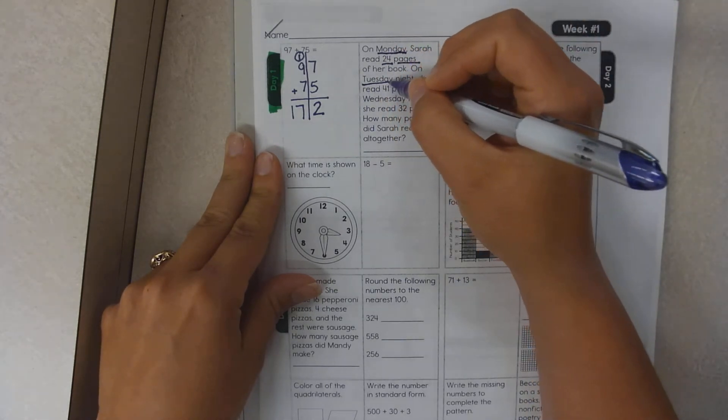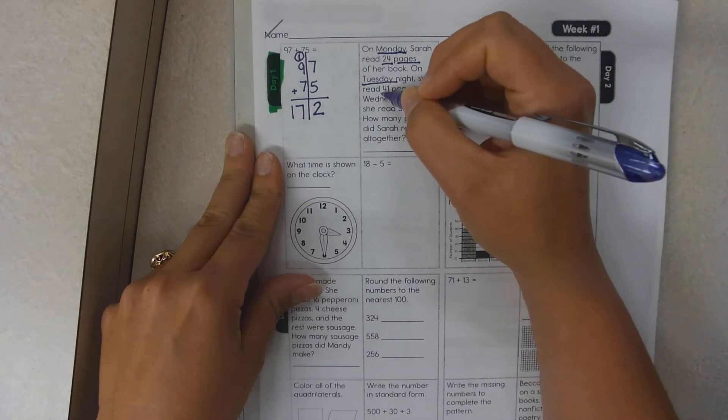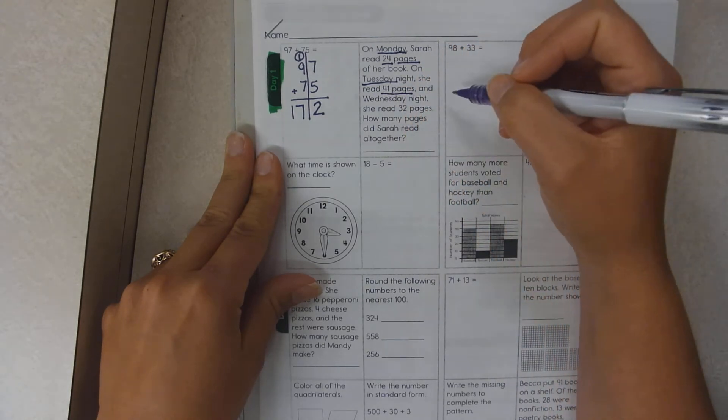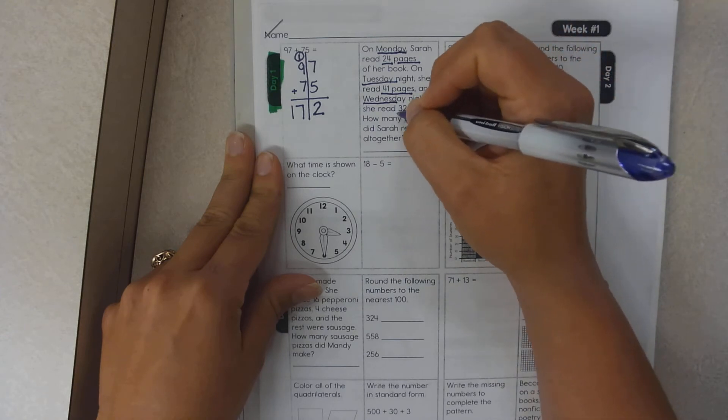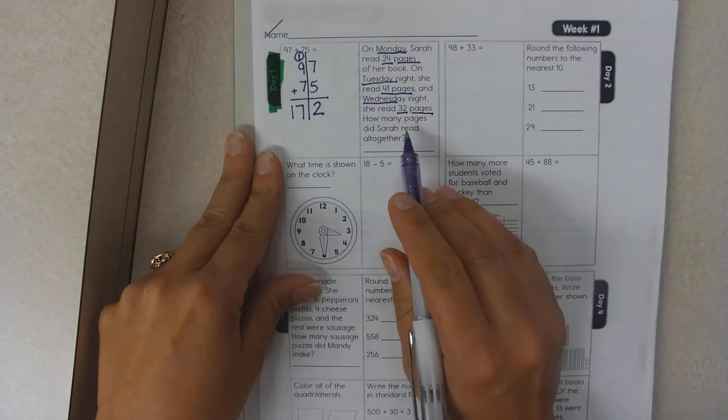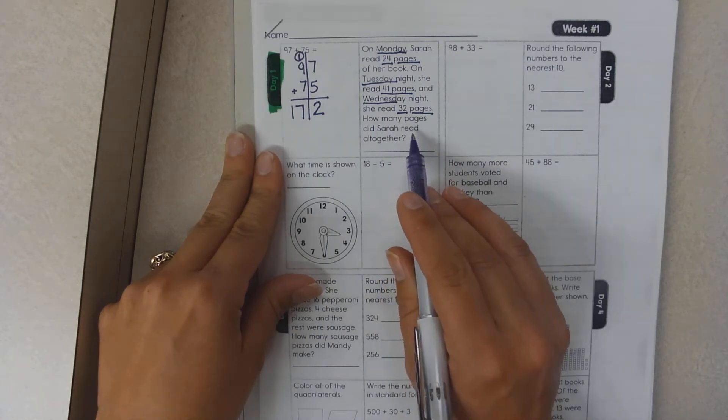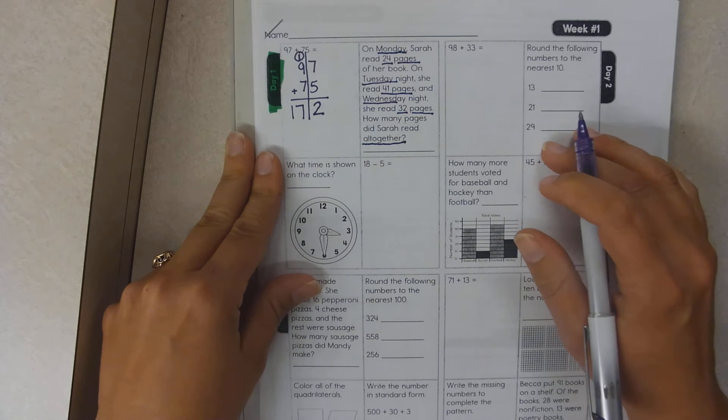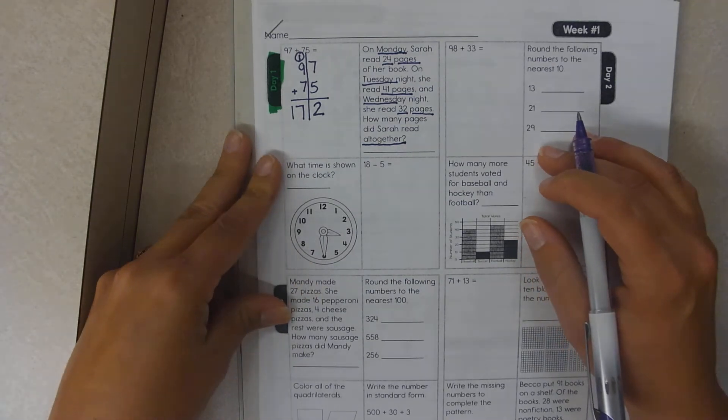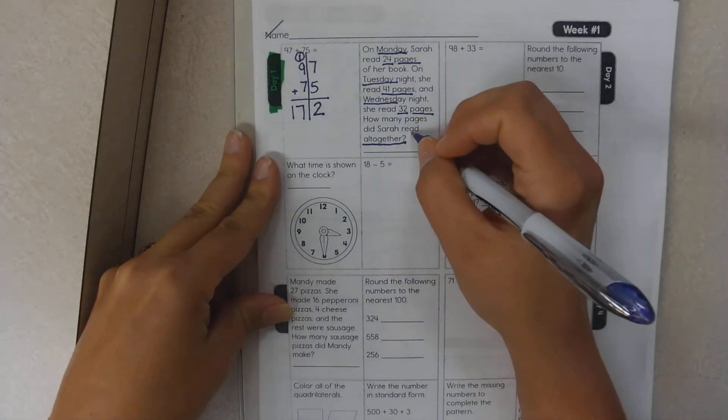On Tuesday, she read 41 pages. Wednesday, she read 32 pages. Now, all together as of right now, means to add.